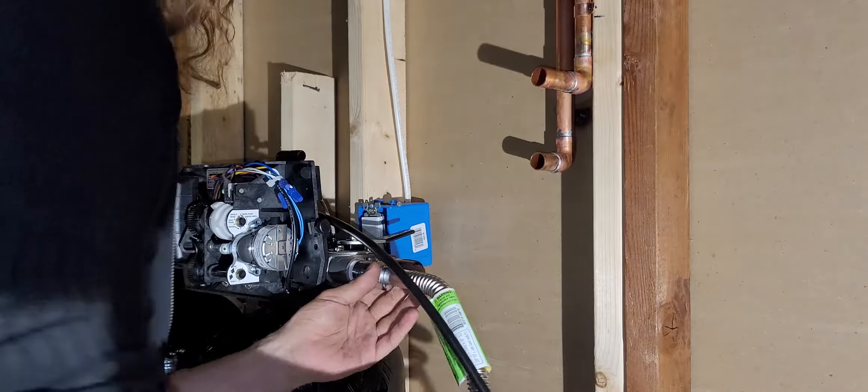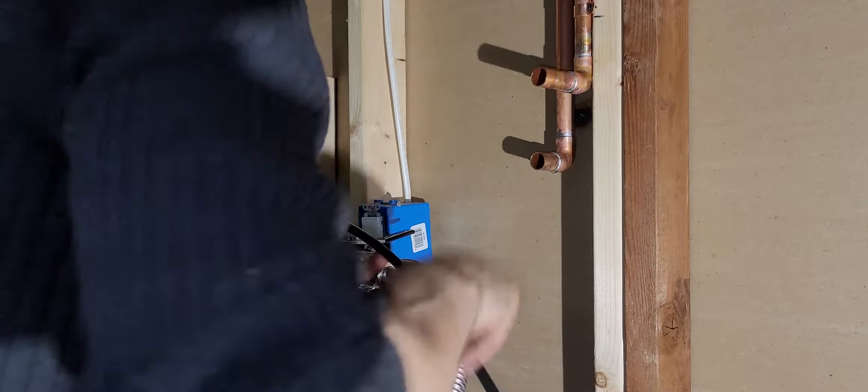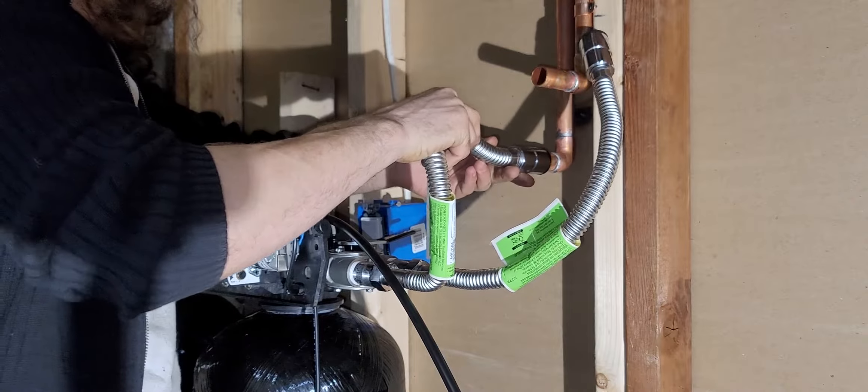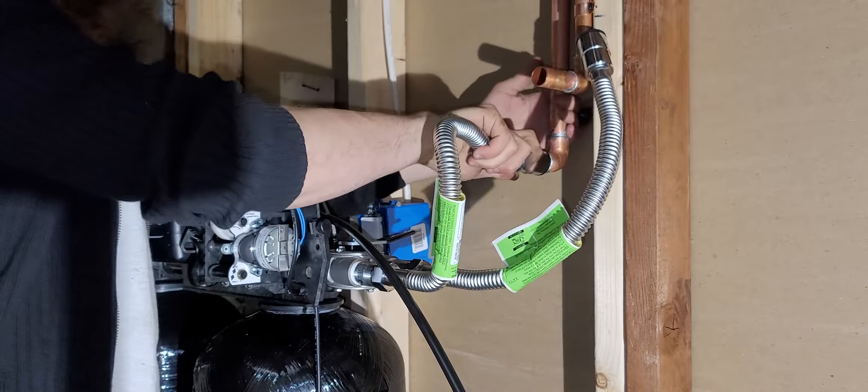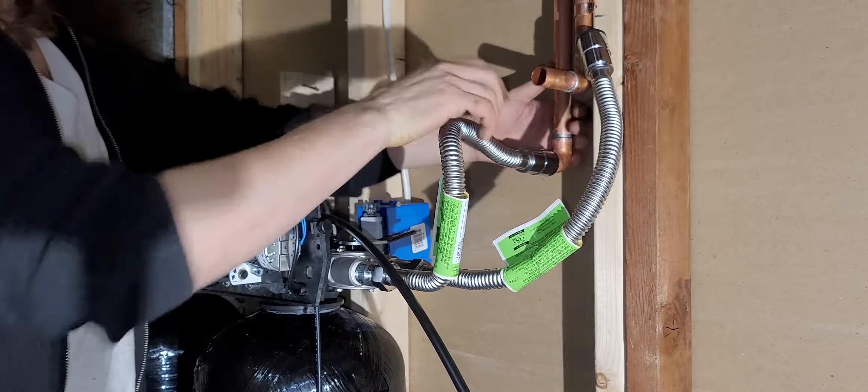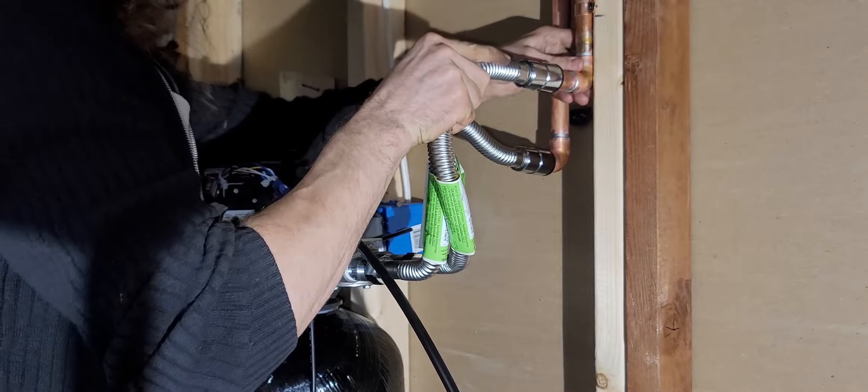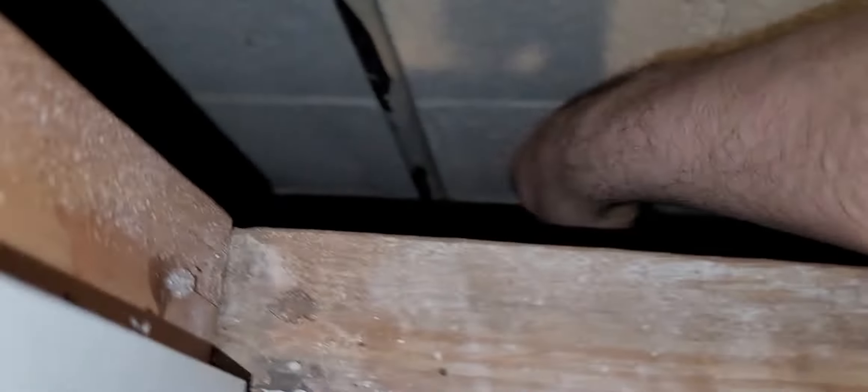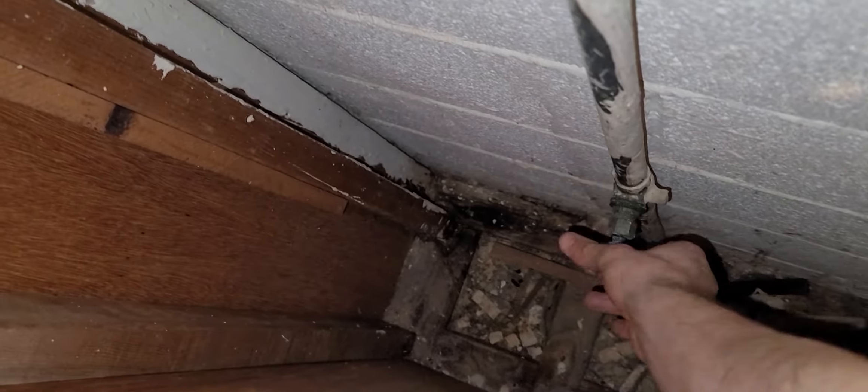But now you can kind of see the method to my madness. I have my inlet and my outlet for the house. And I'm using the supplied 3/4 inch flexible tubings that was supplied with the softener. Or, well, I bought it extra to make my life a little bit easier. And they're just push fittings, and that's really nice. Time to test. Good luck, everybody.